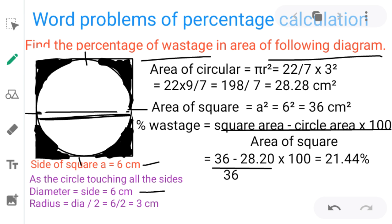That is why I have taken here diameter equals side, that is also 6 cm. The radius of the circle then becomes 6 by 2, that is radius equals dia by 2, we get 3 cm.